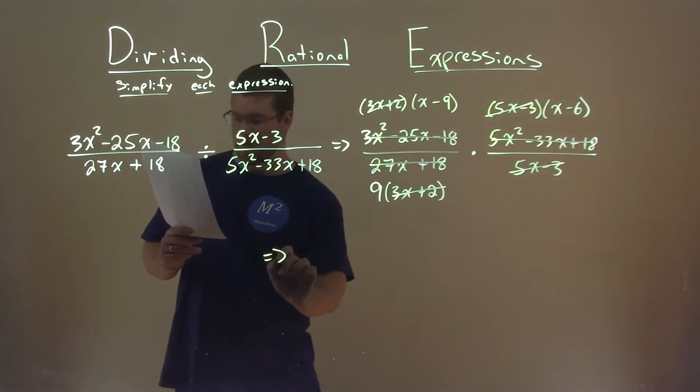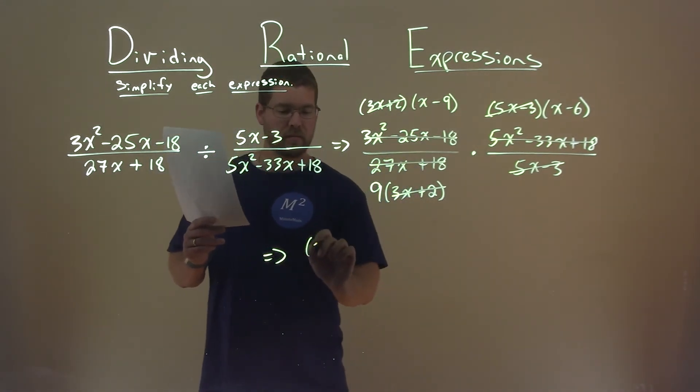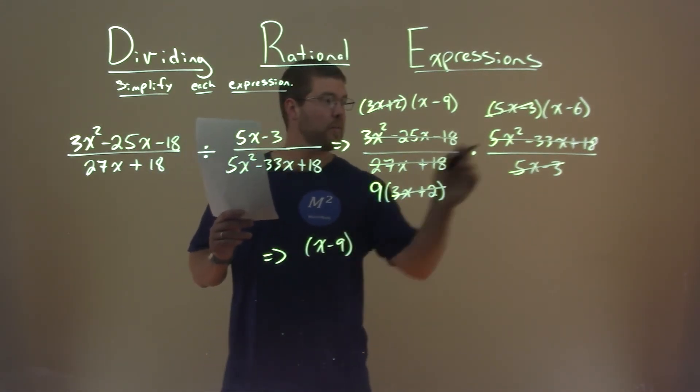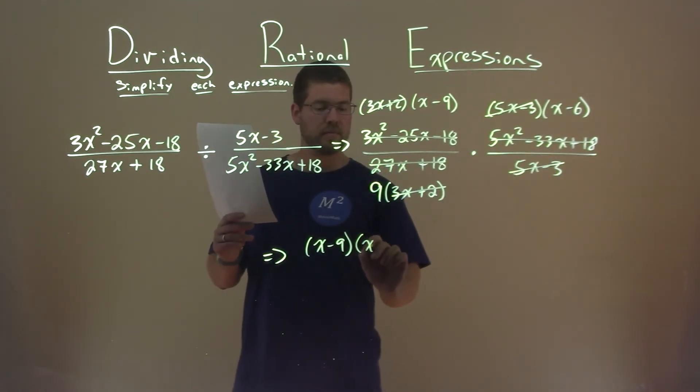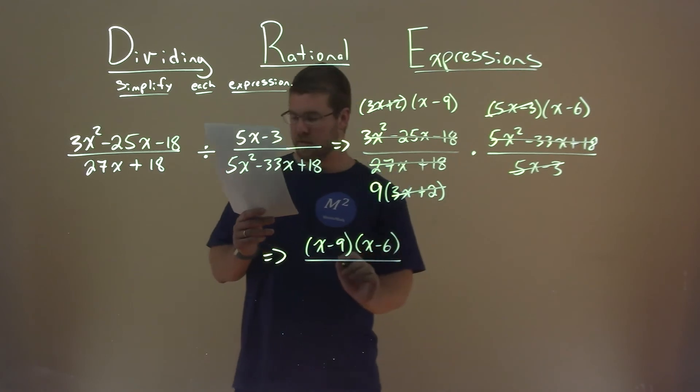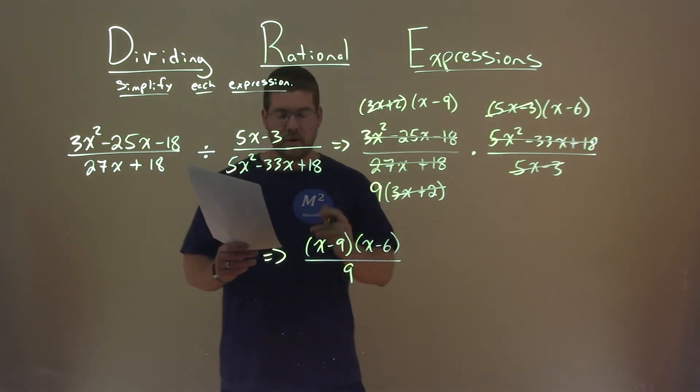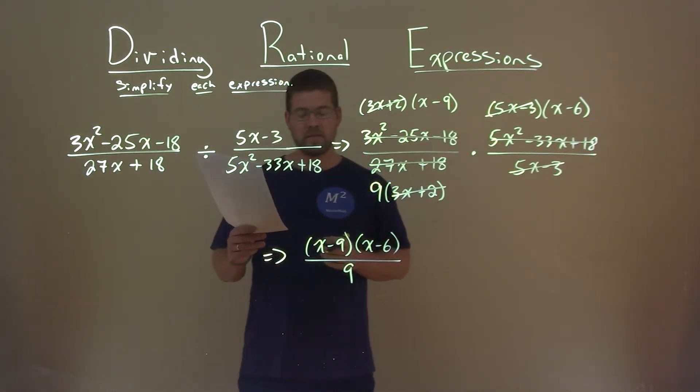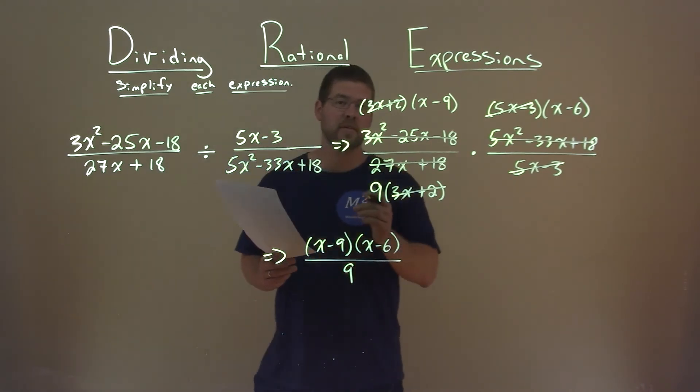So what are we left with? Well, the numerator has x minus 9 times x minus 6, over the denominator, which all that's left is 9. And so, x minus 9 times x minus 6 all divided by 9 is our final answer.